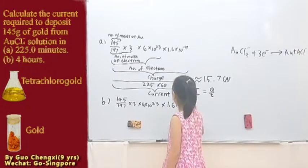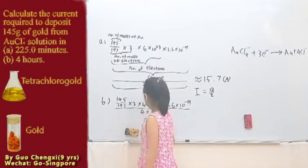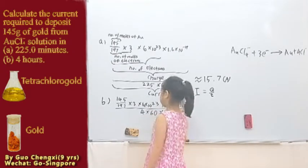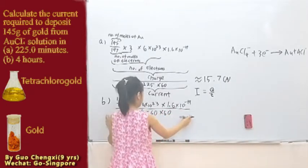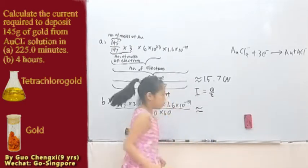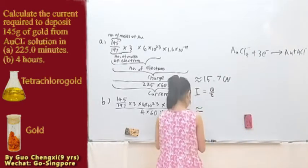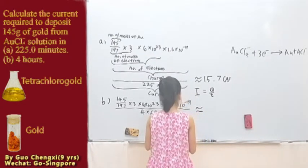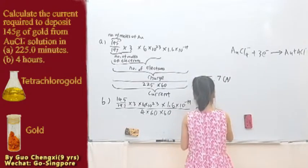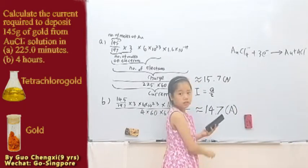Then finally, this is the charge, not current. Then finally, current. It's just our time is 60 minutes, need seconds. So need to time another 60. It's still the same way, just the time is different. Let me use the calculator here.